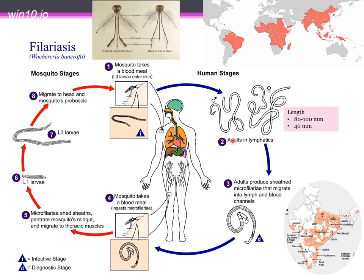Lymphocytes circulate and are affected by the worms. In the adult stage, the worm produces a protective sheath outside. Eventually, if another mosquito bites, it ingests microfilariae — the smallest larval form — which enter back into the mosquito.